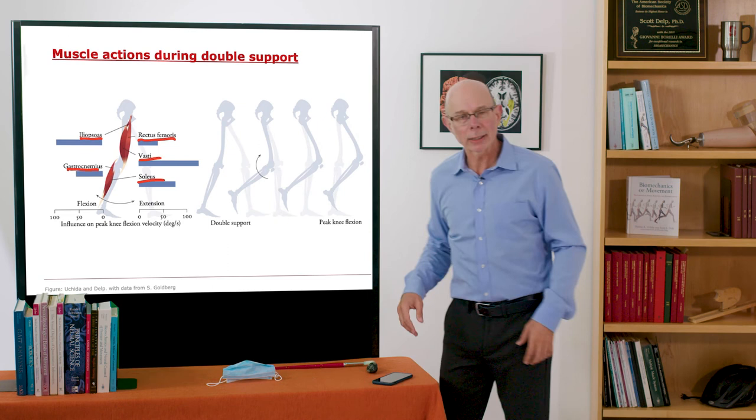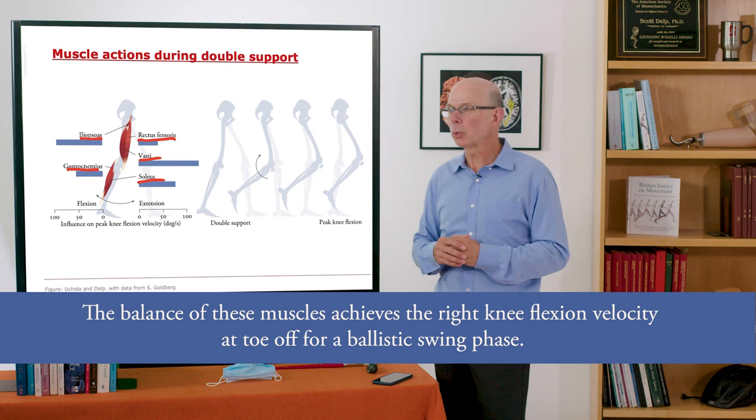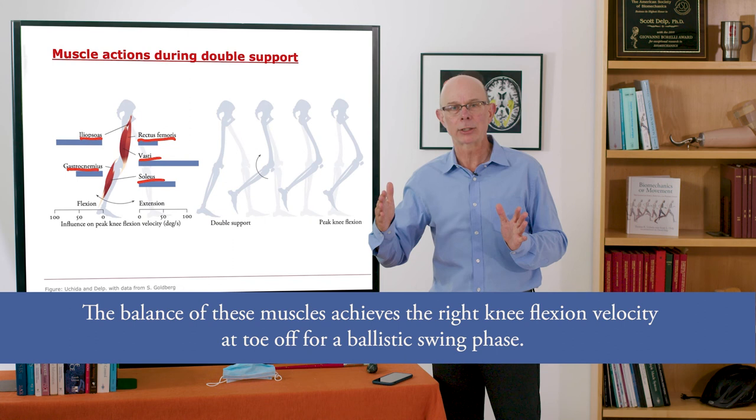Gastrocnemius does what you'd expect. It crosses behind the knee. It generates a knee flexion moment. And it helps initiate the swing phase and produces a nice knee flexion acceleration. So it's really the balance of these muscles that achieves the right knee flexion velocity at toe-off so that you can have a nice ballistic swing phase.